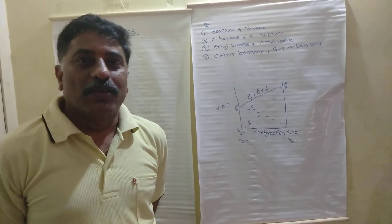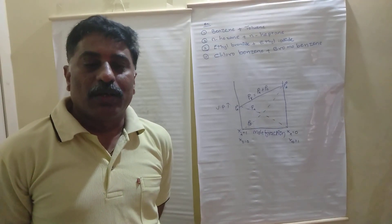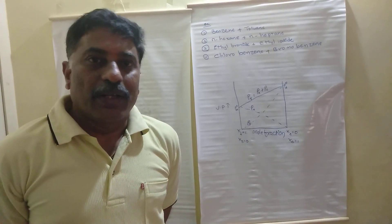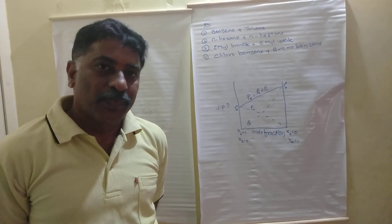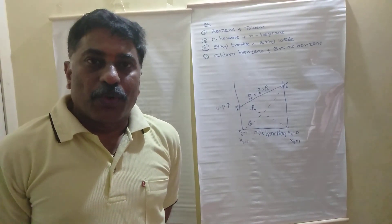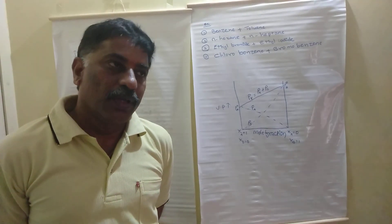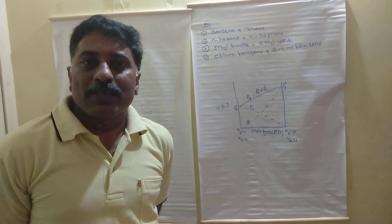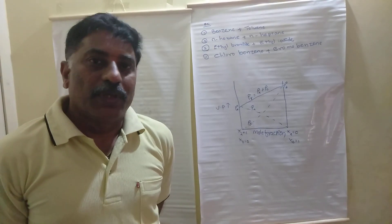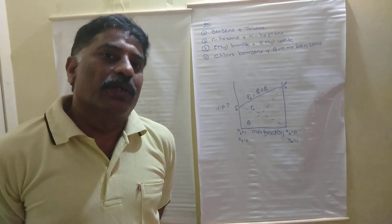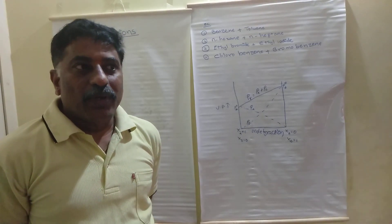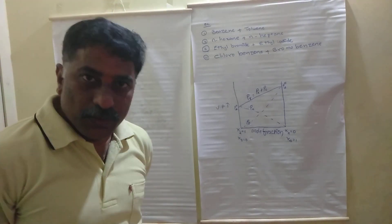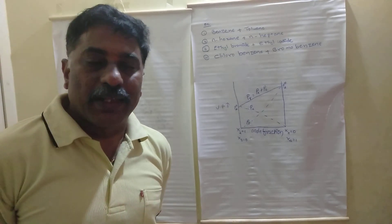So what are ideal solutions? First of all, we should know about solutions. A solution is a homogeneous mixture which contains two or more components. In those solutions, if two components are there, then those solutions are known as binary solutions. So here we are discussing only about binary solutions, and in these binary solutions, some solutions are considered as ideal solutions.